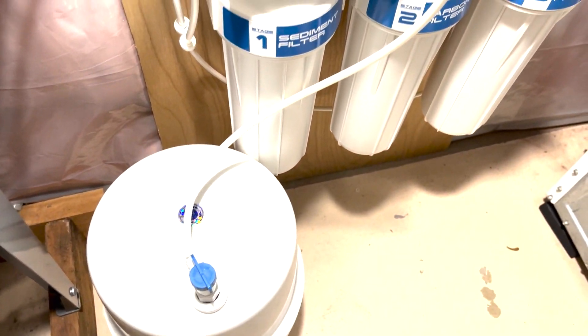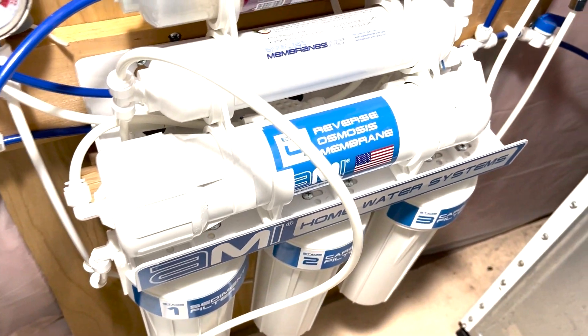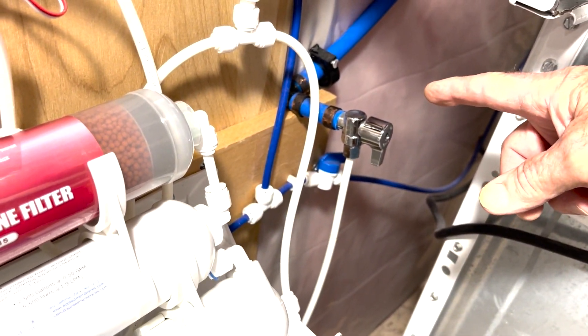The carbon filters are actually made with coconut shells, which is great because that's a renewable resource and it'll filter the taste and odor out of the water better than charcoal.